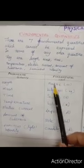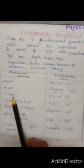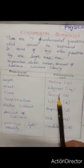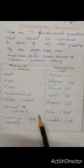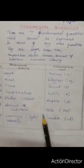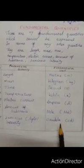Length is expressed in terms of meter. Mass is expressed in terms of kilogram. Time is expressed in terms of seconds. For temperature, Kelvin is its fundamental unit. Ampere is the fundamental unit of electric current. Mol is the fundamental unit of amount of substance. And luminous intensity is measured by candela. They are expressed in terms of alphabetical letters.